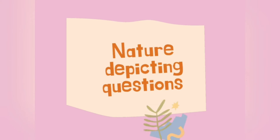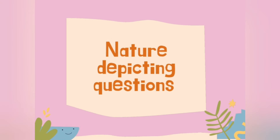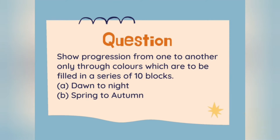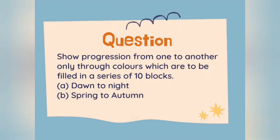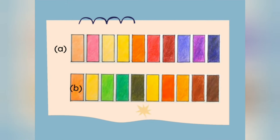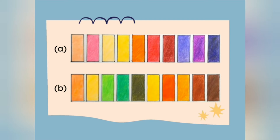Let's discuss the next kind of question: nature-depicting questions, also categorized as season-depicting questions. These questions are framed like: 'Show progression from one to another only through colors, filled in a series of 10 blocks' — for example, dawn to night, or spring to autumn. A sample answer is shown for reference. These questions are very similar to transformation grid questions, which I'll properly explain in the next category.